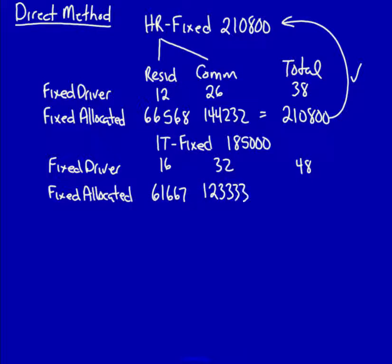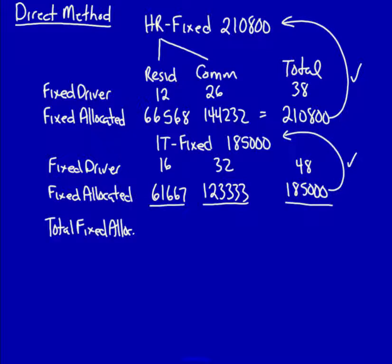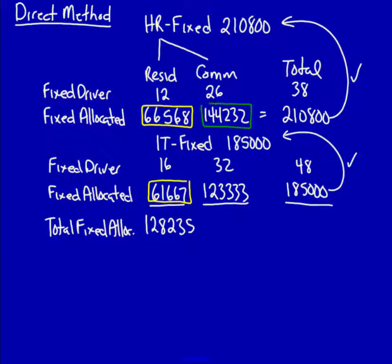Total is 185,000 — perfect. I can now calculate the total: 66,568 plus 61,667 equals 128,235. And 144,232 plus 123,333 equals 267,565.